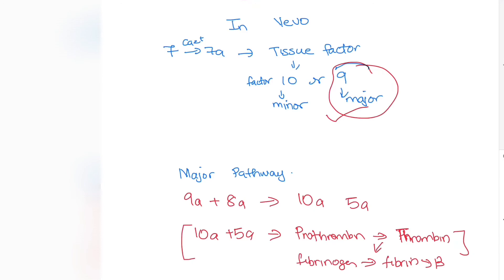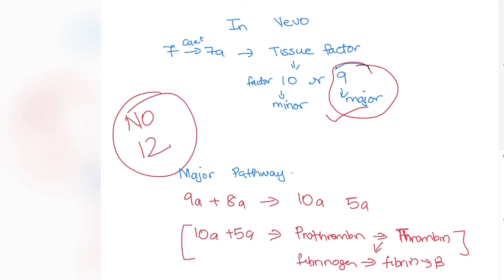In the in vivo pathway, you'll notice we haven't seen factor 12. In the in vitro intrinsic pathway, factor 12 activates 11, which activates 9, which activates 8 — but in vivo, there is no factor 12. So a patient could have a problem with factor 12, yet their coagulation appears normal. The deficiency only becomes apparent during in vitro testing. These are important clinical considerations. That's it for this video — see you in the next one!